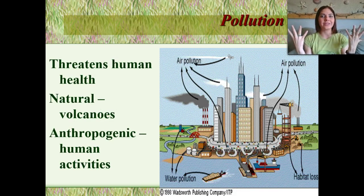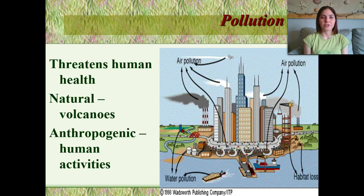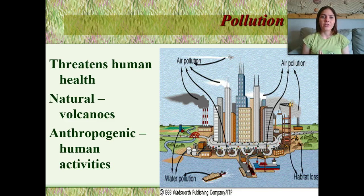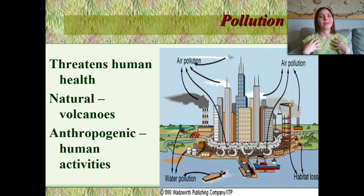Pollution — huge problem. There are many threats to humans from pollution as well as other organisms that live in oceans, trees, land, pretty much anywhere. There are two different types of pollution: it can come from natural sources or of course it can come from us humans.